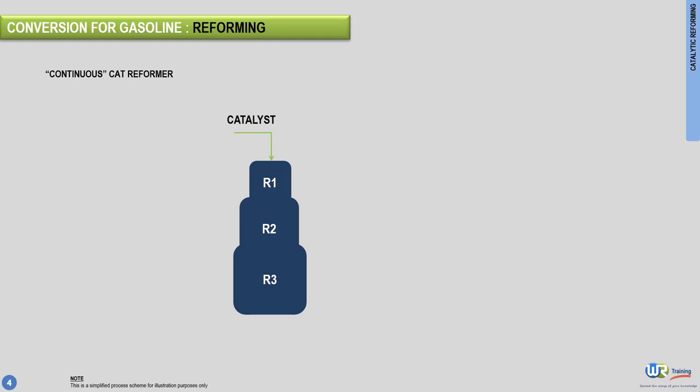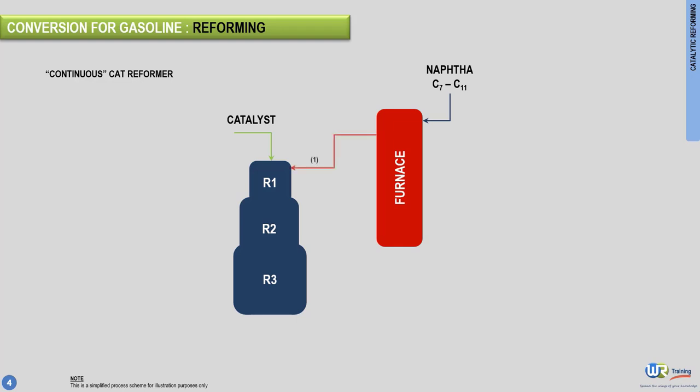The heavy naphtha feed is first introduced to a furnace where it is heated. Next, the feed passes through the mesh of the first reactor. The mixture then exits the first reactor and is reintroduced back to the furnace. Once reheated, the mixture is sent to the second reactor. The same process happens again: the mixture is reintroduced back to the furnace, then to the third reactor.